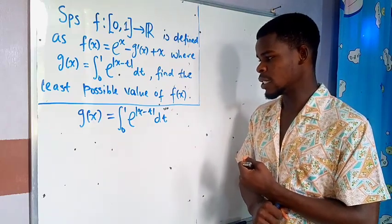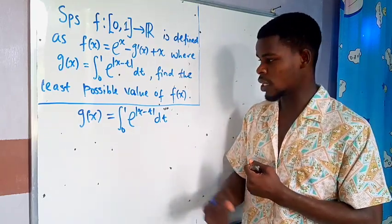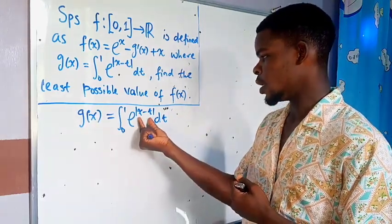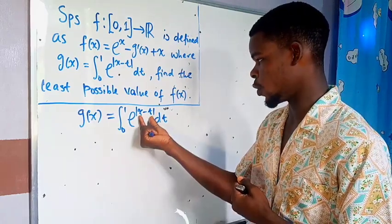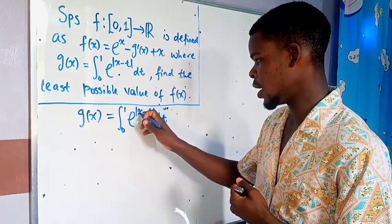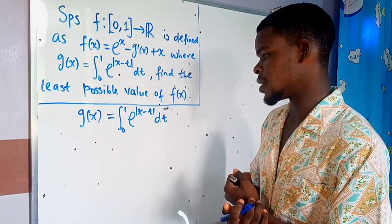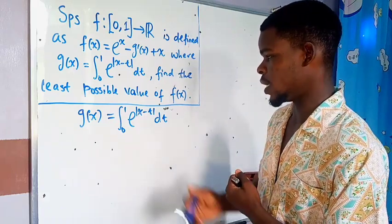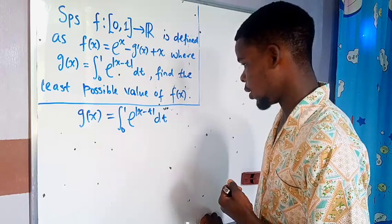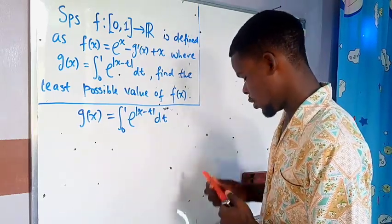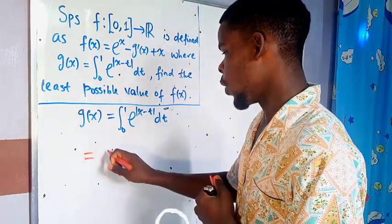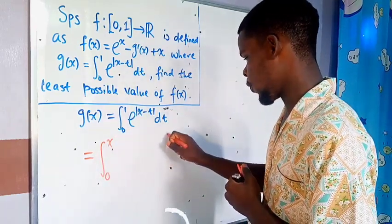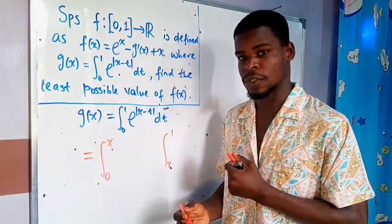The absolute value ensures the result remains non-negative. If x is bigger than t, we don't need the absolute value because the difference will always be positive. But if x is less than t, we need to put a negative into x minus t to maintain the non-negativity — that's what the absolute value does. So I'm going to break this integral apart: from 0 to x, and then from x to 1.